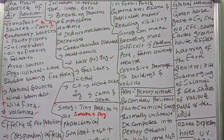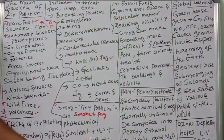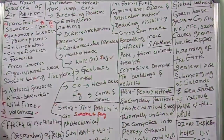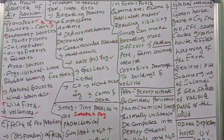Smog generally refers to photochemical smog, which is created when sunlight reacts with nitrogen oxides and volatile organic compounds present in fossil fuels. These reactions create ground-level ozone and particulate matter.